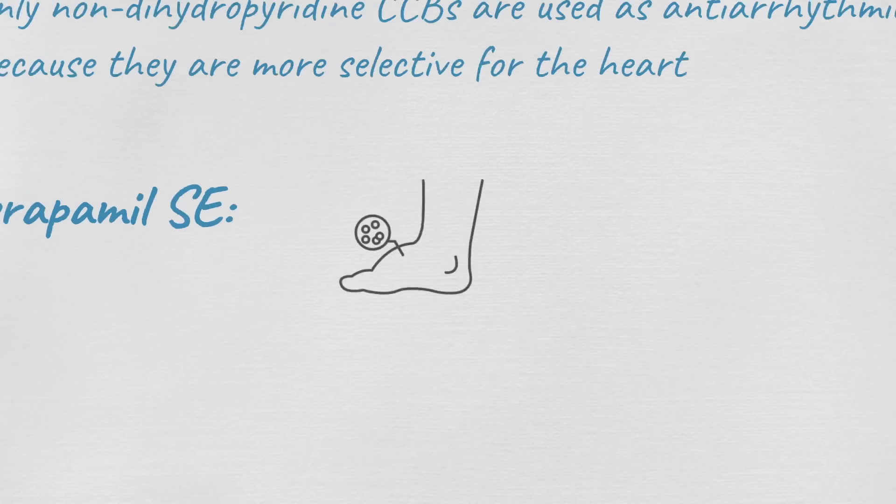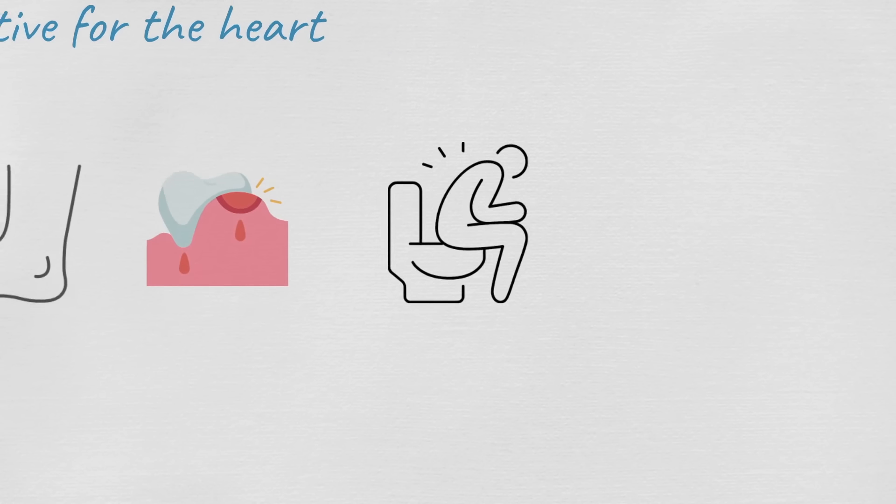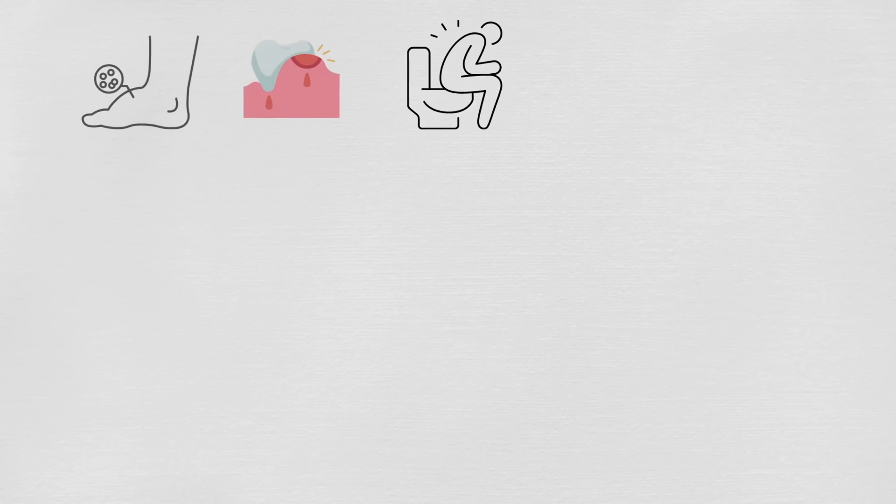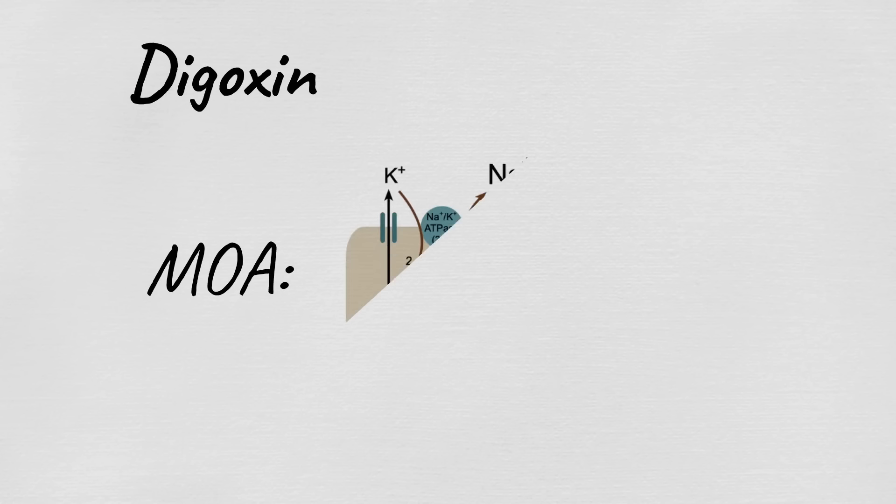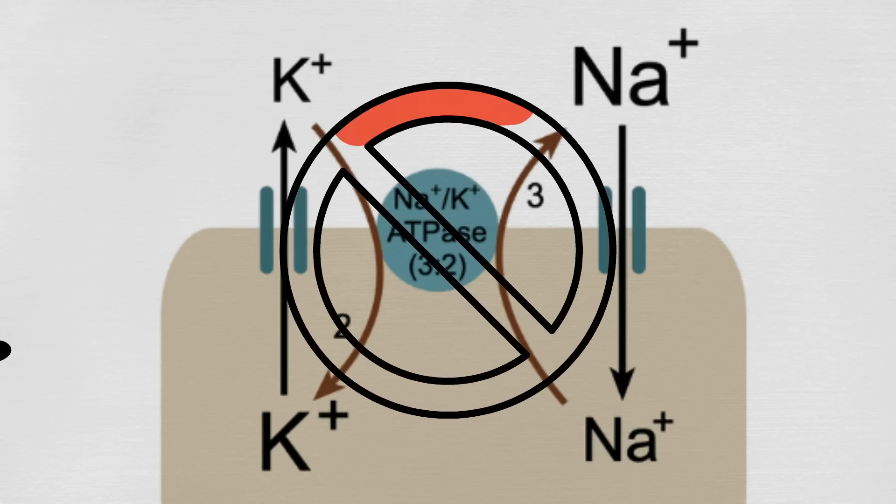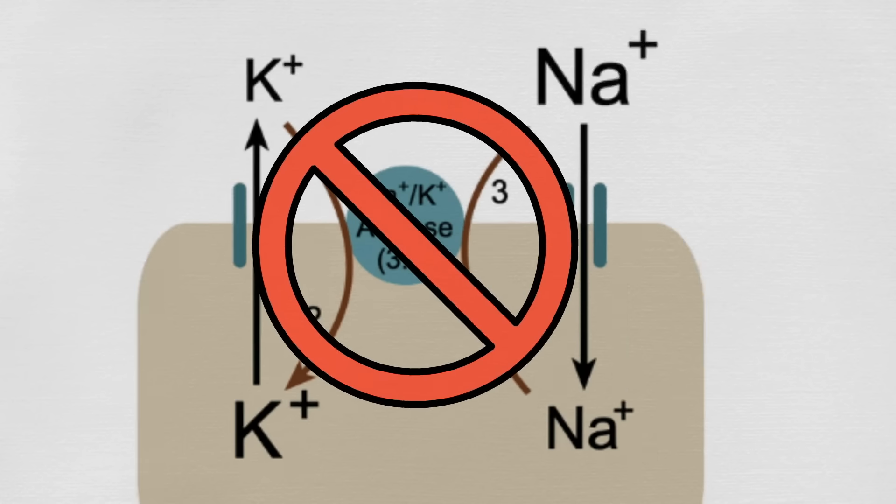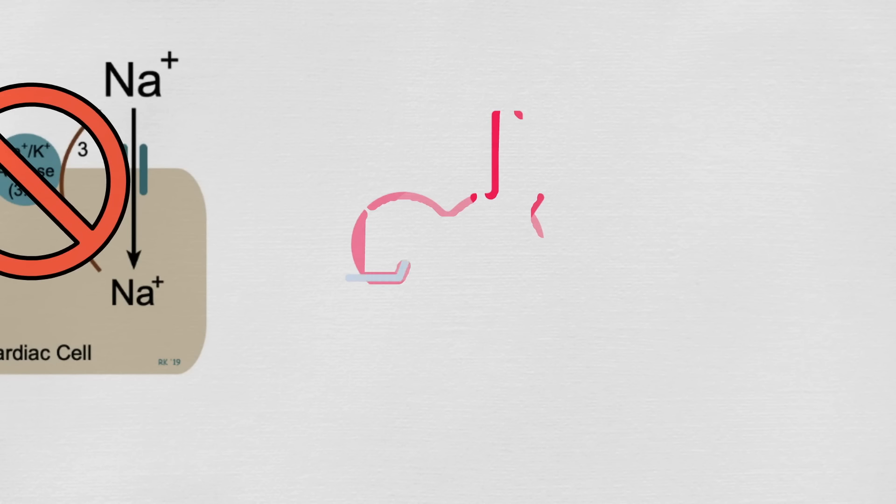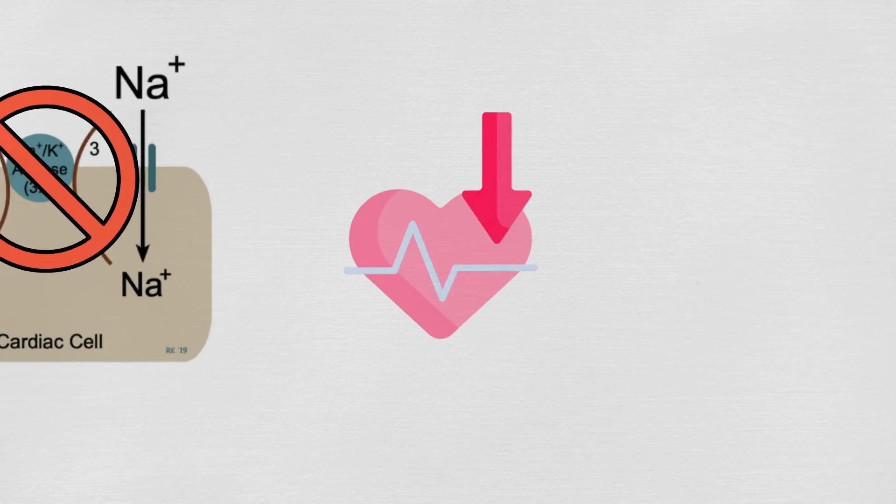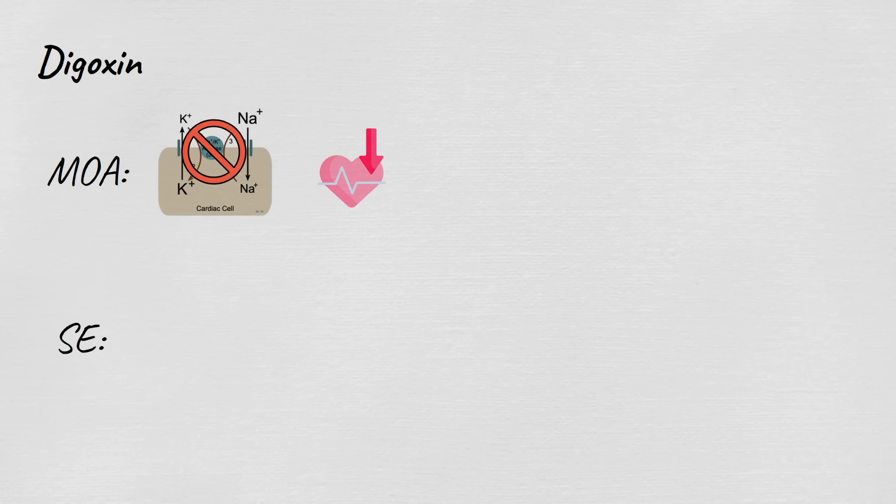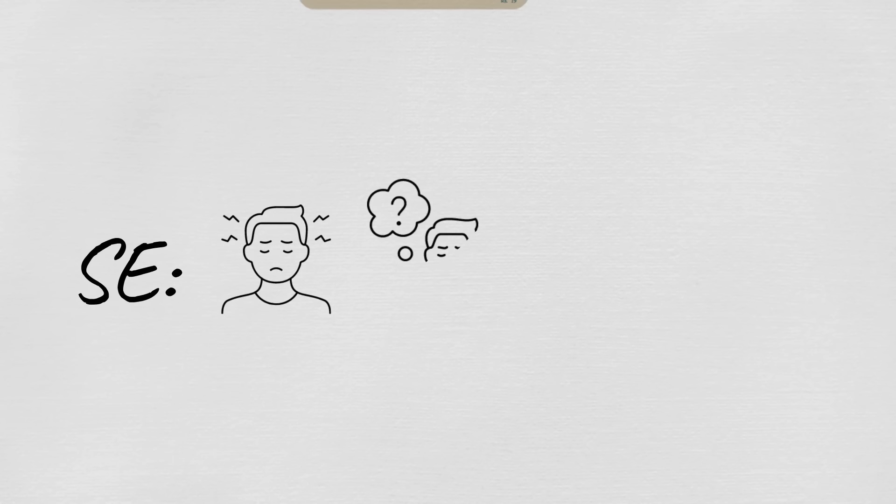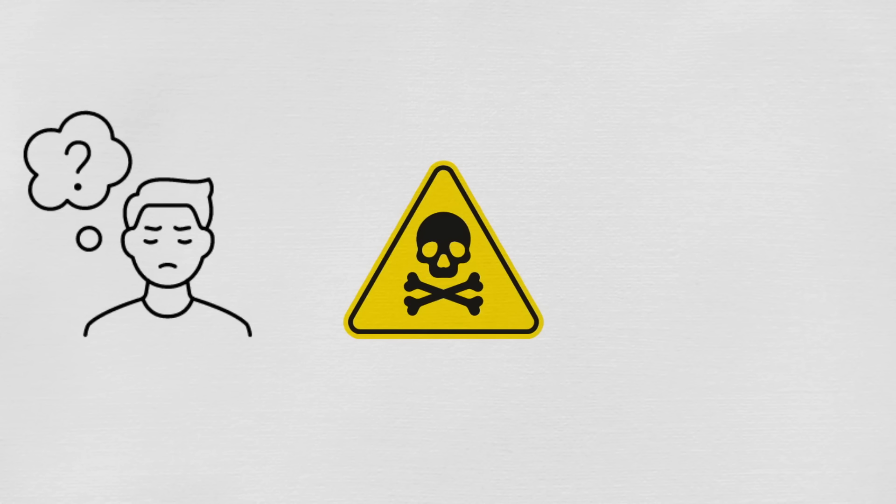Now we have other agents that do not fit in the previous classes because of their different mechanism of action. First we have digoxin, which is a sodium-potassium ATPase blocker. By inhibiting this pump in the myocardial cells, this will increase the force of cardiac contraction. It also has a parasympathetic effect which decreases the heart rate. Side effects include dizziness, mental disturbance, and headache, and it can cause digoxin toxicity.